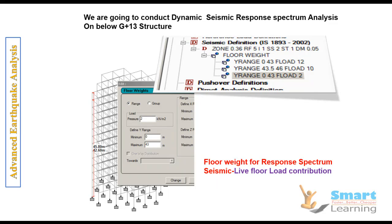In our last session we saw how to apply the response spectrum floor weights — for example, between 0 to 43 and 43.5 to 46, the 12 and 10 for the top floor, and the floor live weight contribution for seismic is 50 percent, so 4 kN per meter square at 50 percent gives 2 kN per meter square. Next we'll go for the live and dead load configuration.